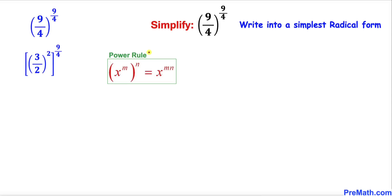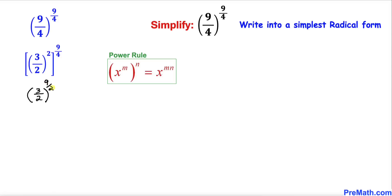Now let's recall the power rule of exponents — that means we can multiply out 2 times 9/4. So therefore we can write this problem as (3/2) whole power (2 × 9/4), which gives us (3/2)^(9/2).